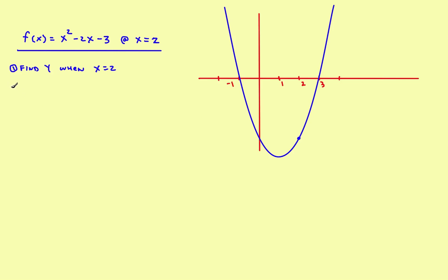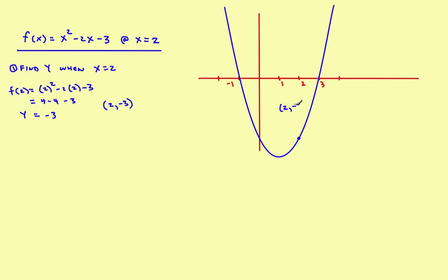Just go ahead and take 2 and plug it into the original function. Everywhere we've got an x, we'll plug in a 2. That gives you 2 squared minus 2 times 2 minus 3, which is 4 minus 4 minus 3, and that gives you negative 3. So when x is equal to 2, y is equal to negative 3. That gives you the point (2, -3).